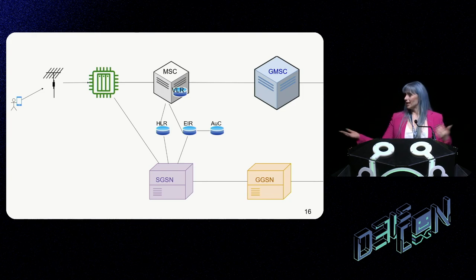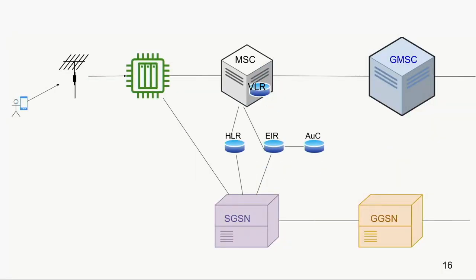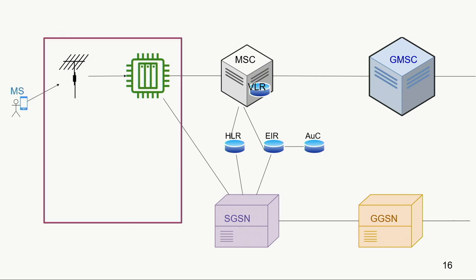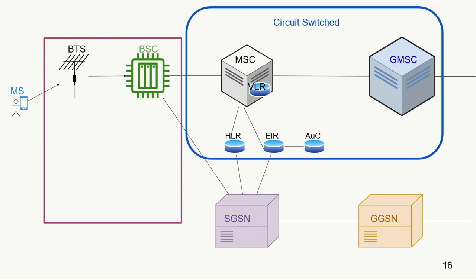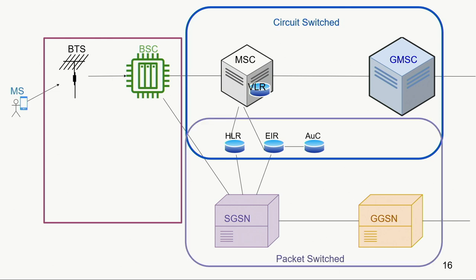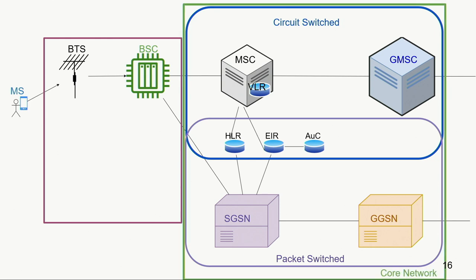So let's see it all together. The top part looks the same as before: our mobile station, radio access network with base transceiver station and base station controller, handing off to our circuit-switched portion in the mobile switching center and gateway mobile switching center. Those shared registers are now consulted by both the circuit-switched and packet-switched portions. In our packet-switched portion, we have our serving GPRS support node and gateway GPRS support node, and that makes up our core network.